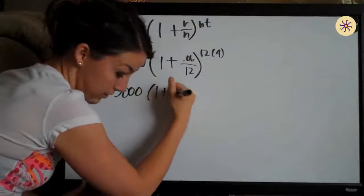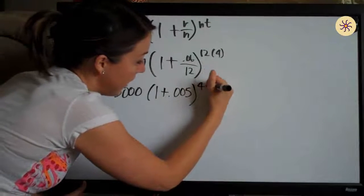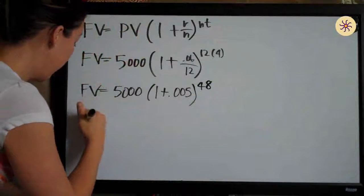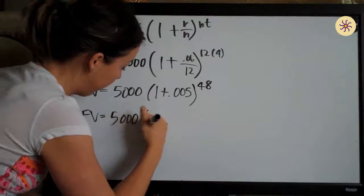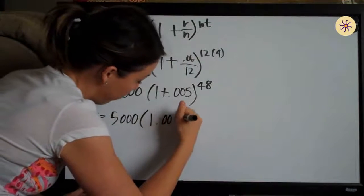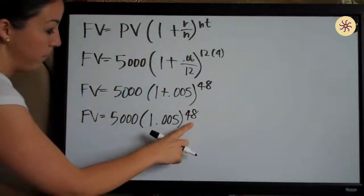we end up with 1 plus .005 and this would be 48. So if you want to simplify ahead of time of plugging into your calculator, you can do this on paper pretty easily.